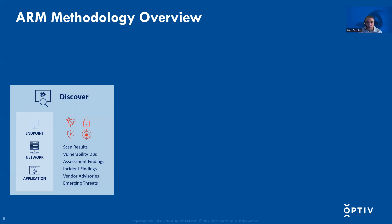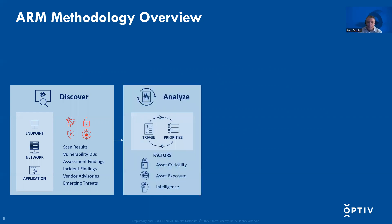Once assets and vulnerabilities are discovered, a risk-based analysis needs to be performed. In the car example, factors included asset criticality, asset exposure, and threat intelligence — you would want to minimally include those three to get threat intelligence and business context. How you combine them may be unique to your organization, but it typically involves assigning weights to each factor to come up with a risk score. Tools exist to facilitate and even automate this analysis — some use their own formula, others allow customization.